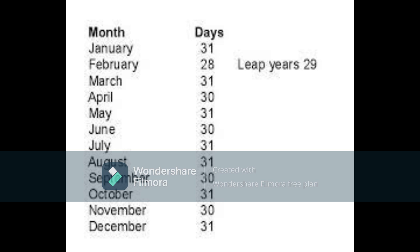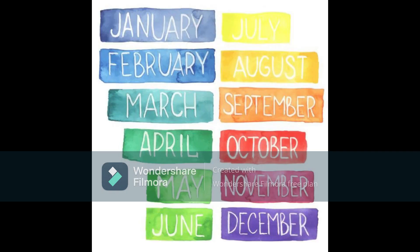How many days are there in a month? There are 30 days and 31 days in a month, except February. February has 28 days and in a leap year it has 29 days. Other months have 30 days or 31 days, making one month. Then 12 months is equal to one year. There are 12 months in a year.